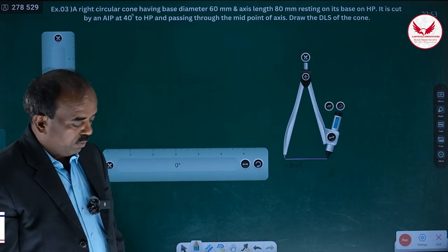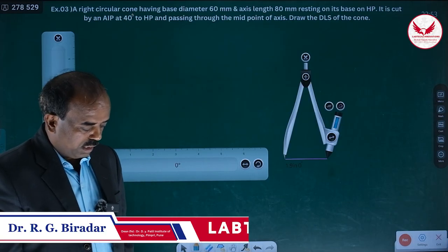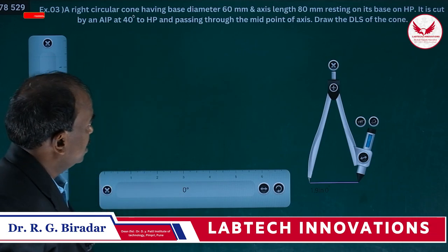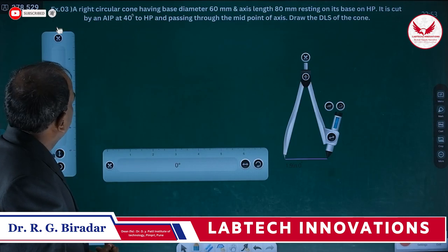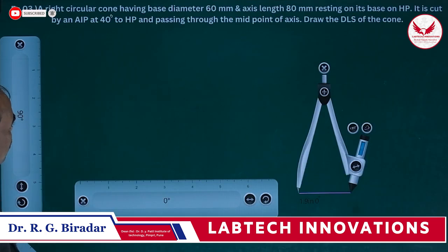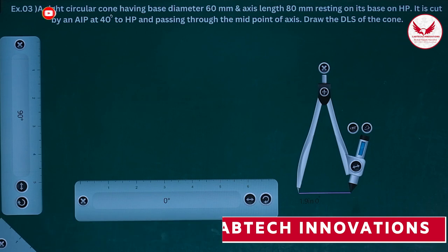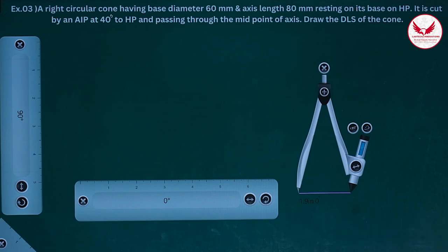Hello friends, today we will see the DLS - development of lateral surfaces of a cone. The problem is a right circular cone having base diameter 60 mm and axis length 80 mm resting on its base on HP. It is cut by an AIP at 40 degrees to HP and passing through the midpoint of the axis. Draw the DLS of the cone.